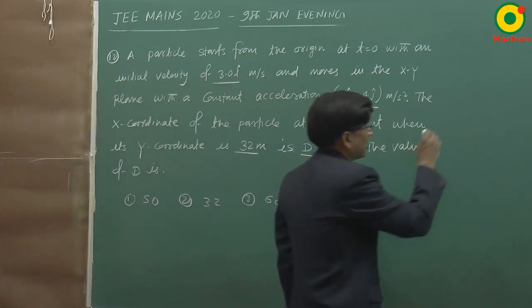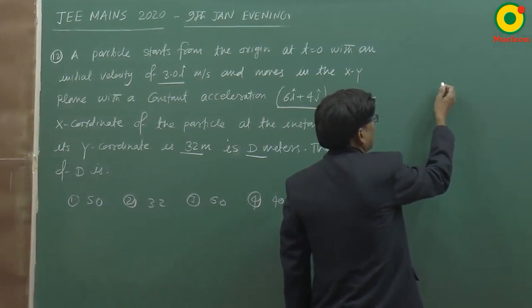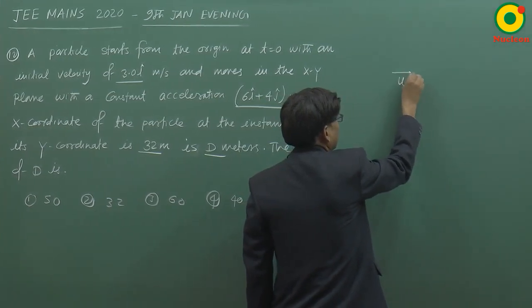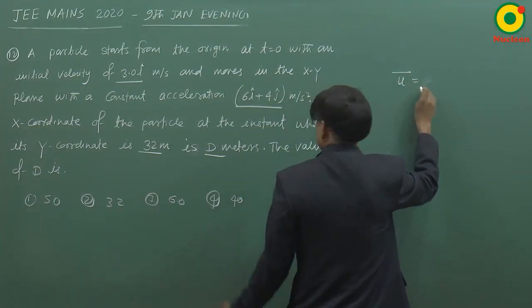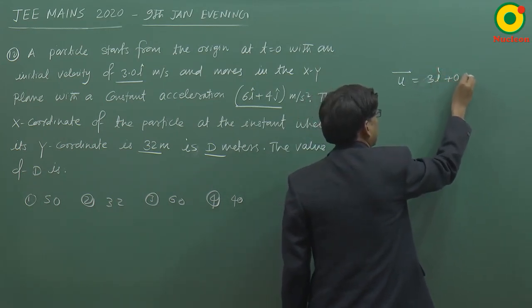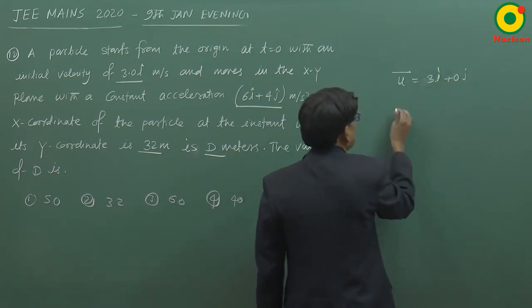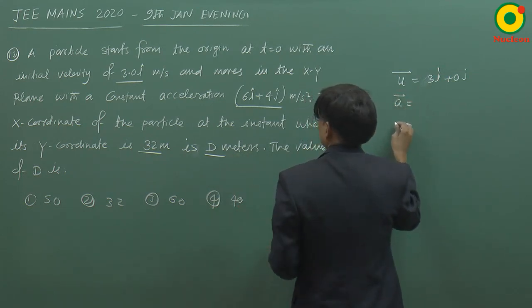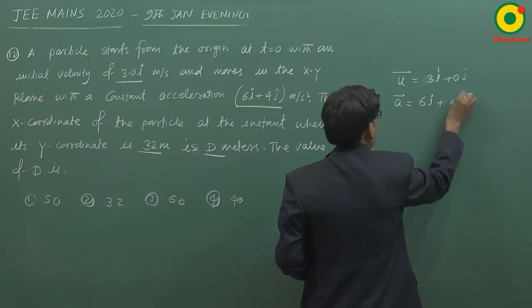Hamein pata hai ki initial velocity ko likhenge. So x direction mein 3 and y direction mein 0. The acceleration is 6i plus 4j.